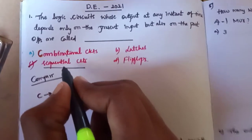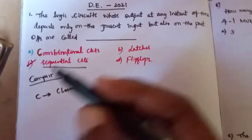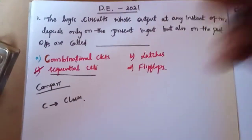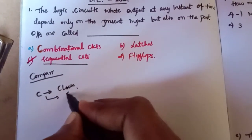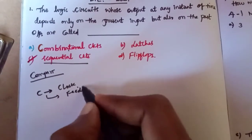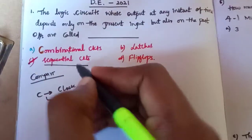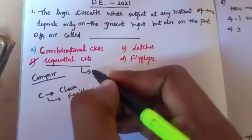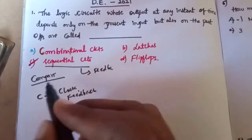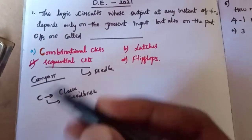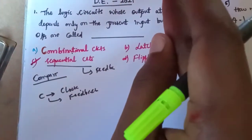Next, the sequential circuit has feedback. The combination circuit has no feedback — only a sequential circuit has feedback. The sequential circuit uses a clock signal, feedback, present value, and past value.